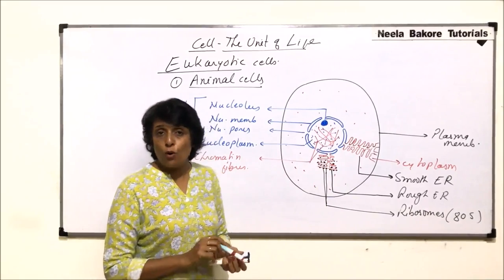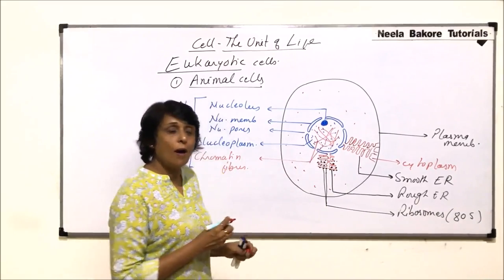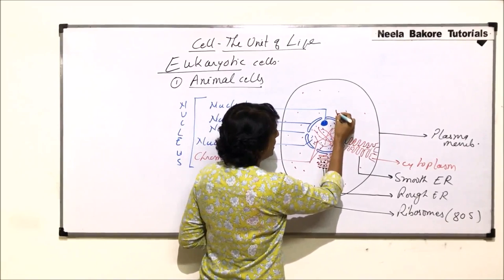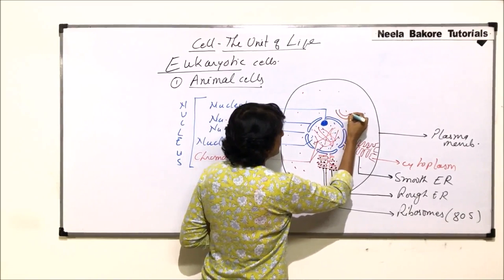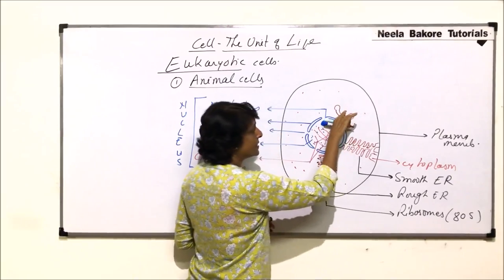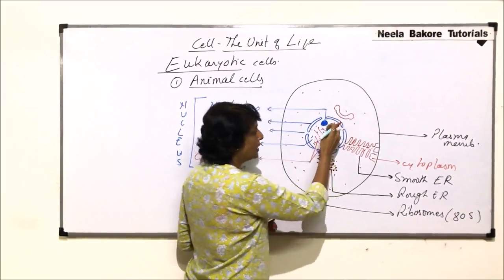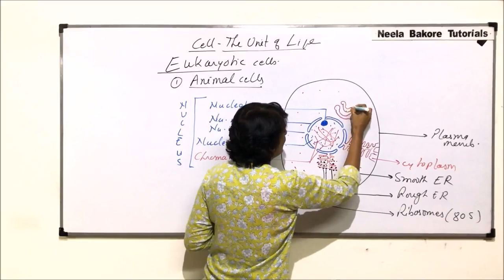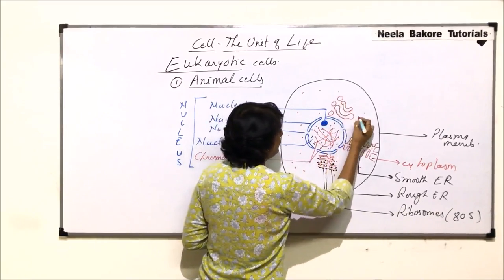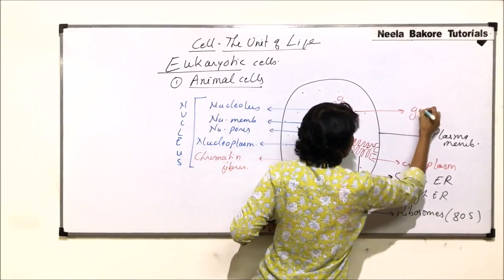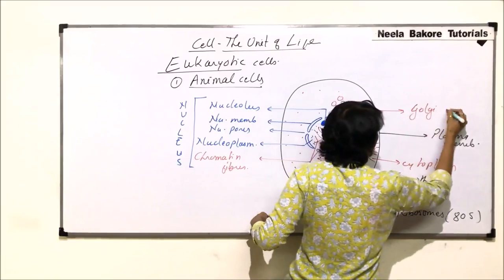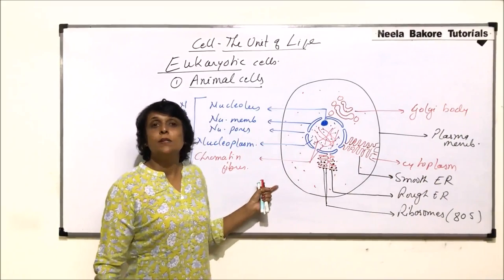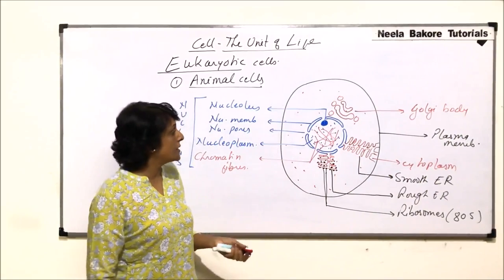Let us draw one more organelle — the Golgi complex or Golgi body. Whenever we draw the Golgi body, we draw it so that its concave side faces towards the plasma membrane and the convex side faces towards the nuclear membrane. This structure is known as the Golgi body or Golgi complex. The details of this structure we will discuss when we talk about all individual organelles separately.